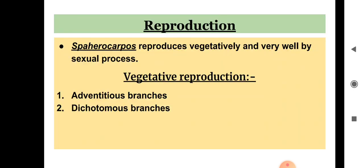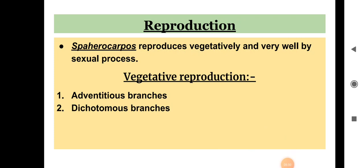Next is reproduction. Sphaerocarpos reproduces both vegetatively and by sexual process, so there are two ways of reproduction: vegetative as well as sexual.